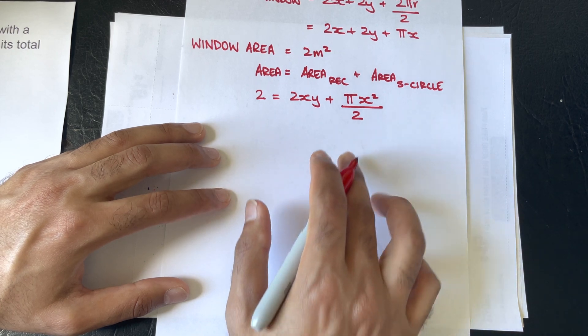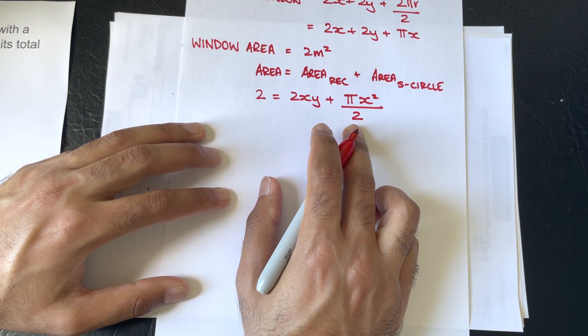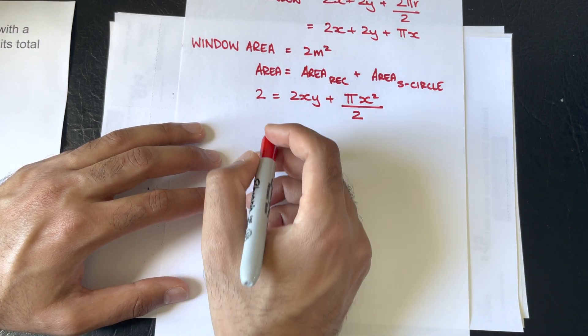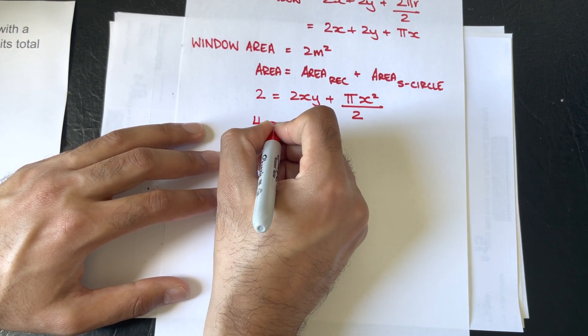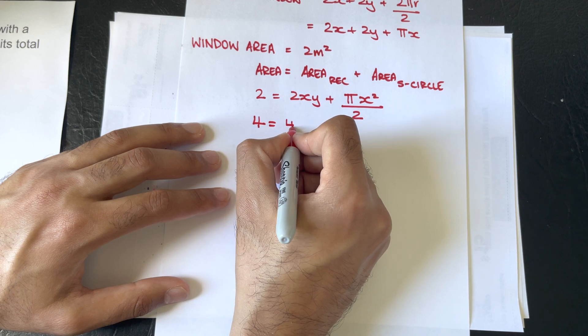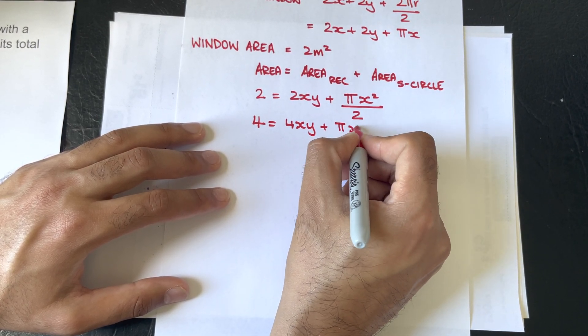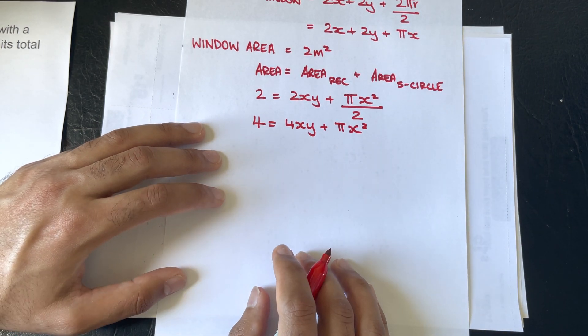Now, to get rid of the 2 at the bottom, I'm going to times each term, each of the three terms, by 2. So, we will get 4 being equal to 4xy plus πx squared.